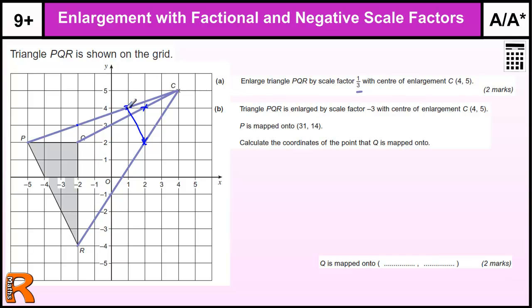And if you draw any triangle that is the right scale factor, so 1 third is big, anywhere on this grid you'd get a method mark as well. So there's one method mark for drawing the triangle the right size and one for being in the right place.